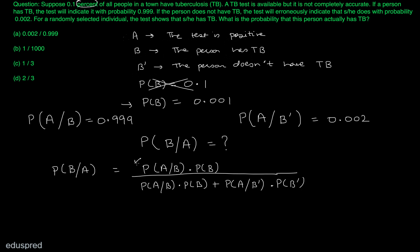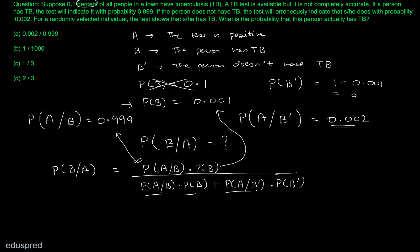We have probability of A given B, which is 0.999. We know probability of B, which is 0.001. We are also given probability of A given B complement, which is 0.002. And we need probability of B complement: if probability of B is 0.001, then probability of B complement equals 1 minus 0.001, which is 0.999.